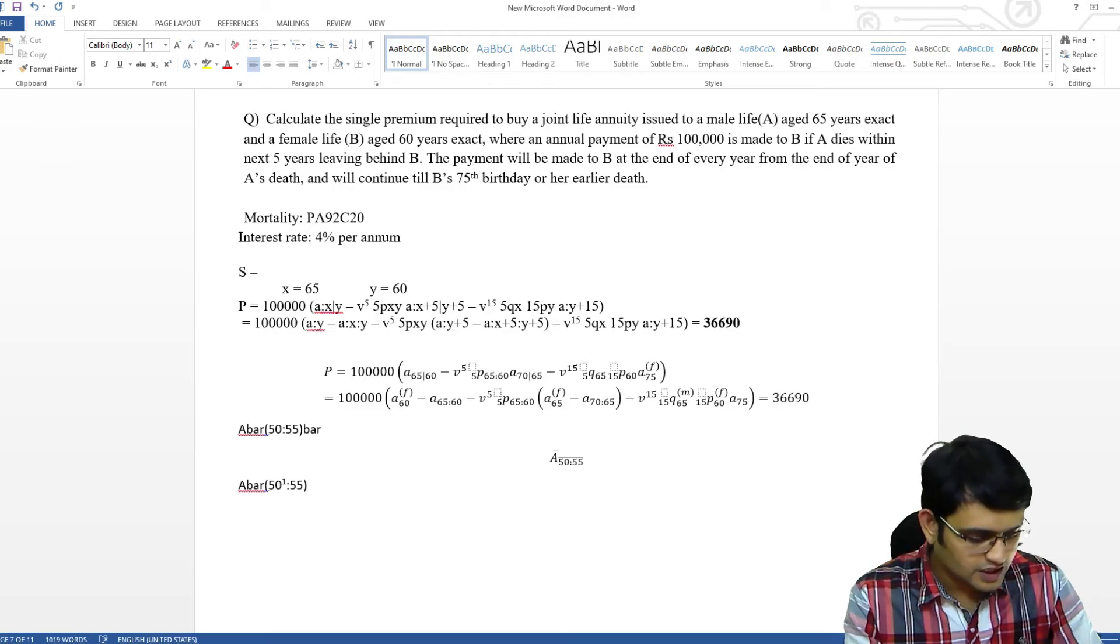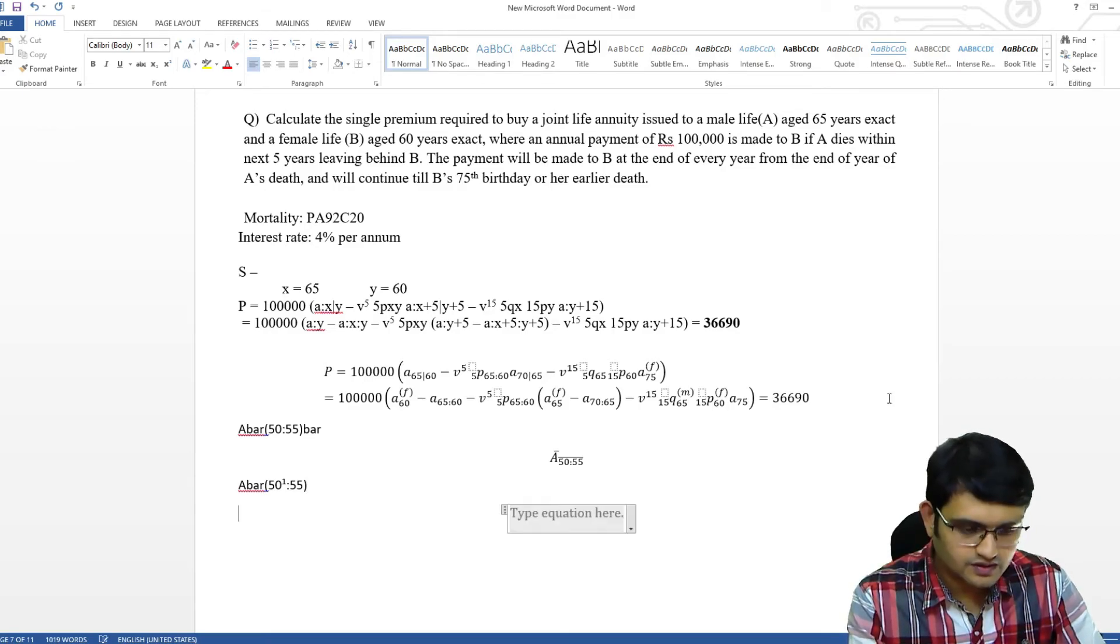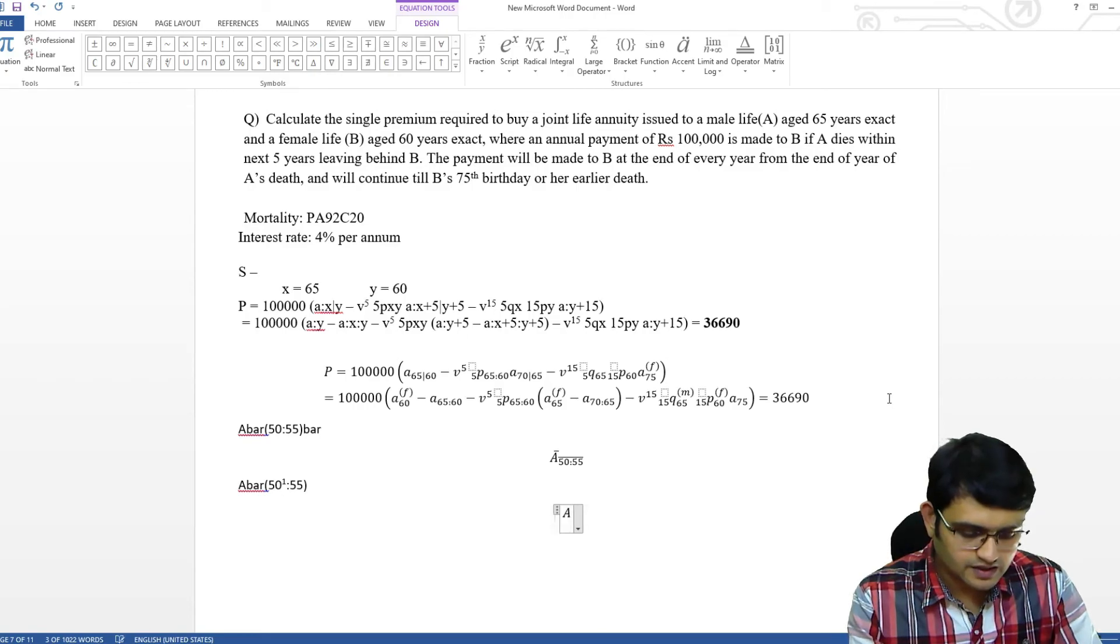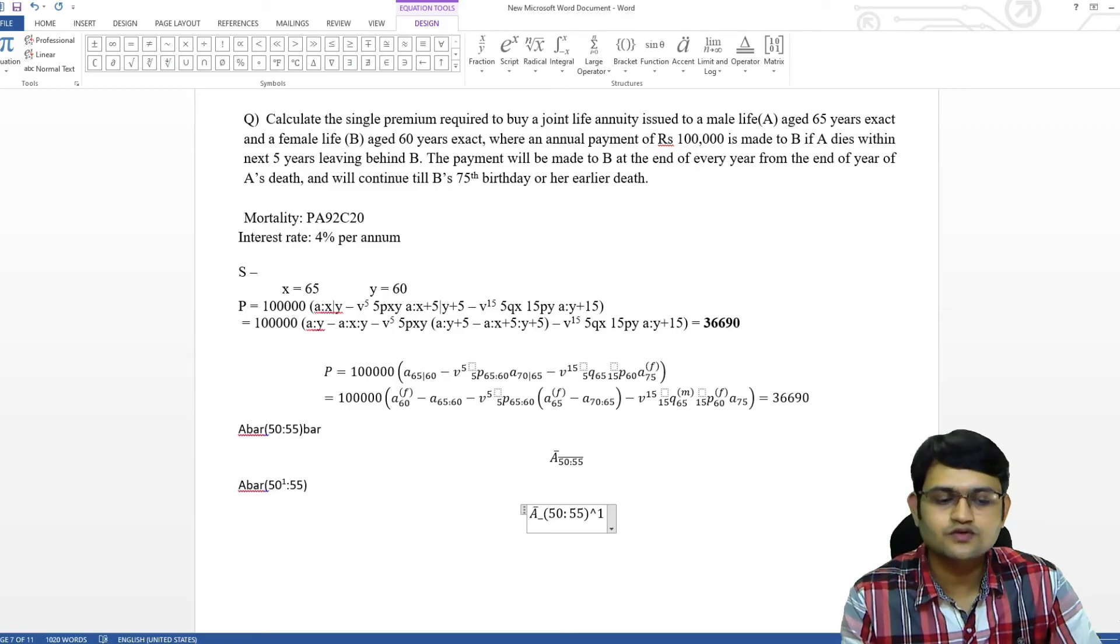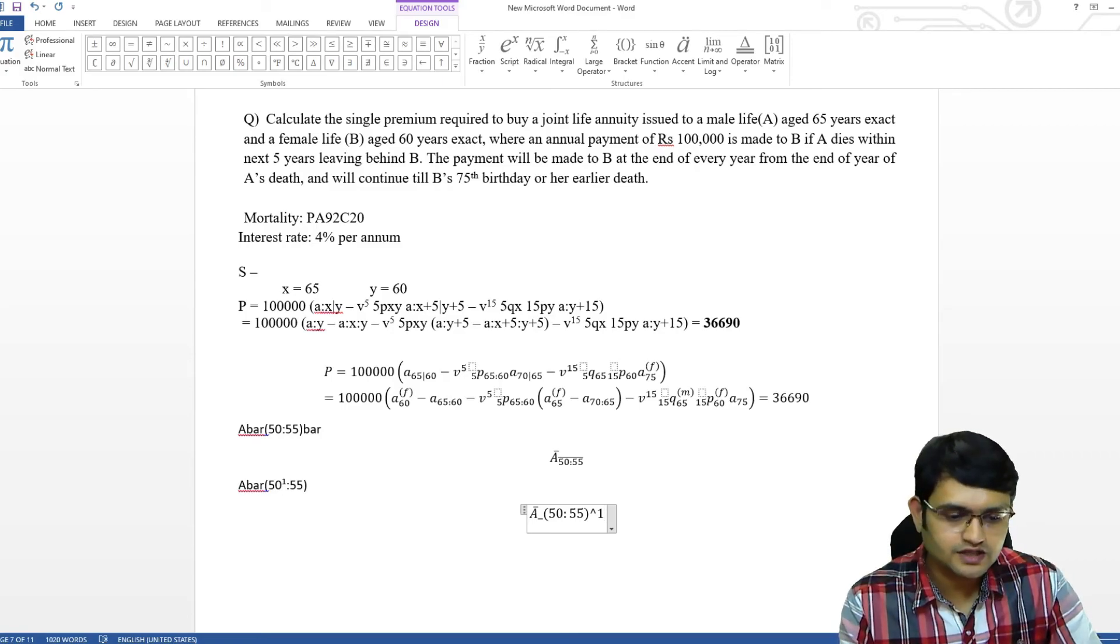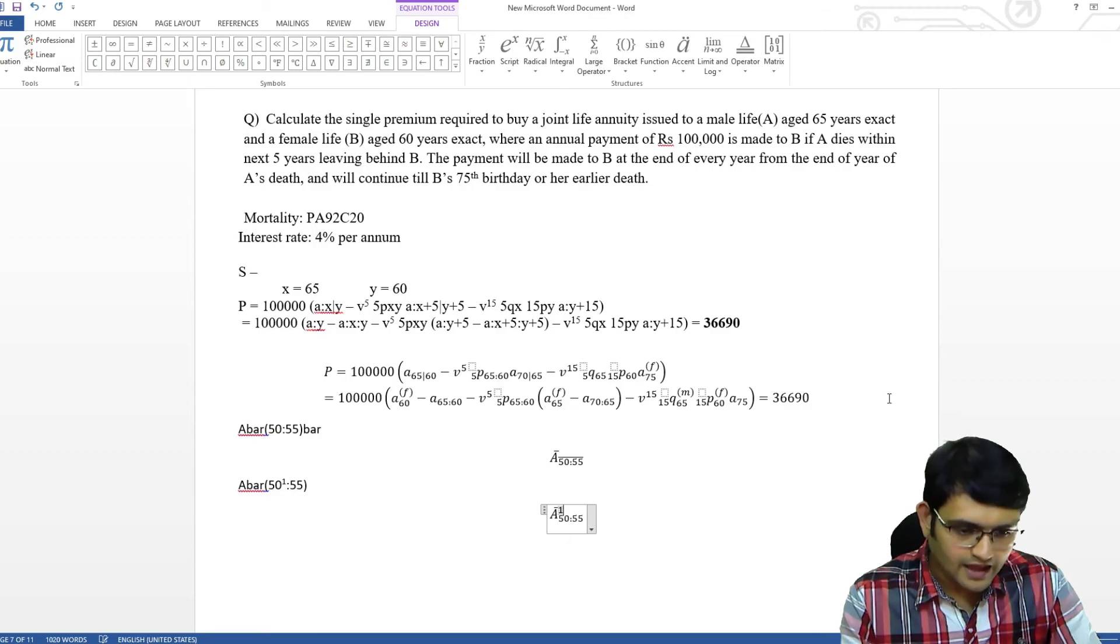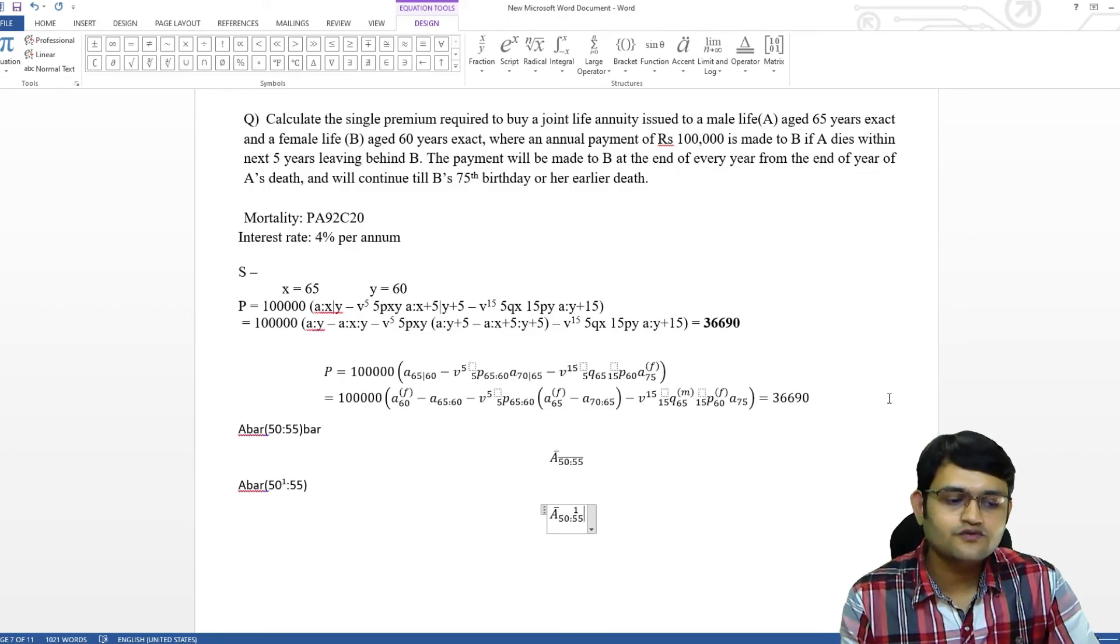while writing it using equation editor we'll use something like, So, I will have 50, 55 and then I'll put raise to 1 or raise to 2 depending on whether we are paying on first death or second death. I'll press space and then I will move this one over either 50 or over 55 to write whether we are saying first death of 50 or first death of 55.